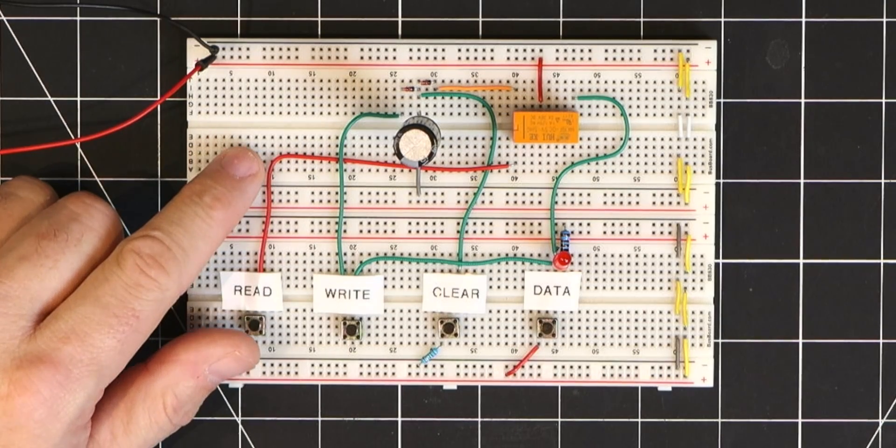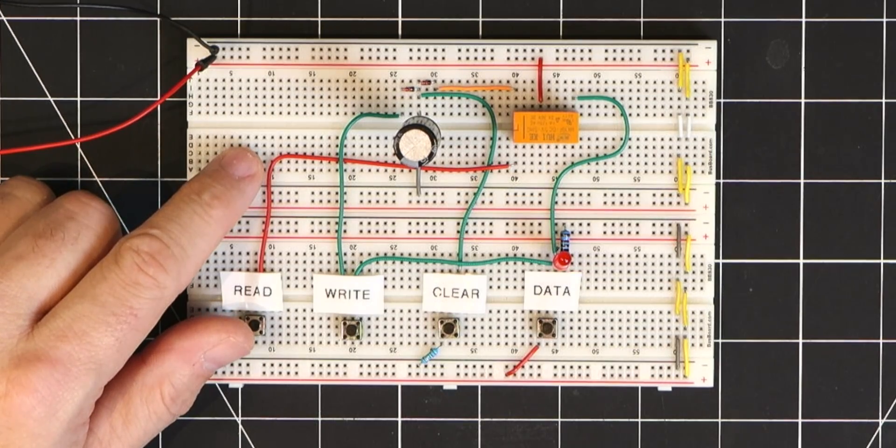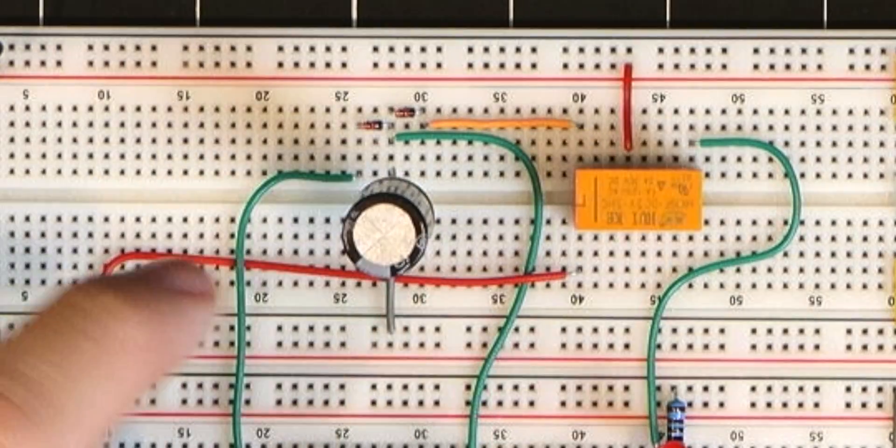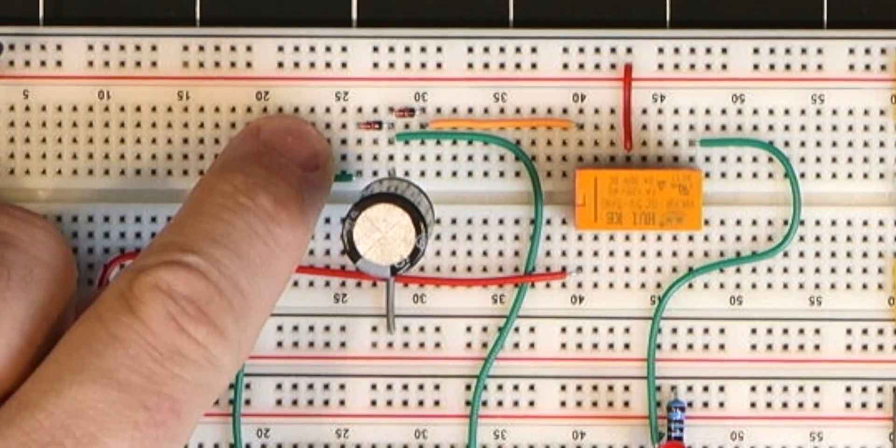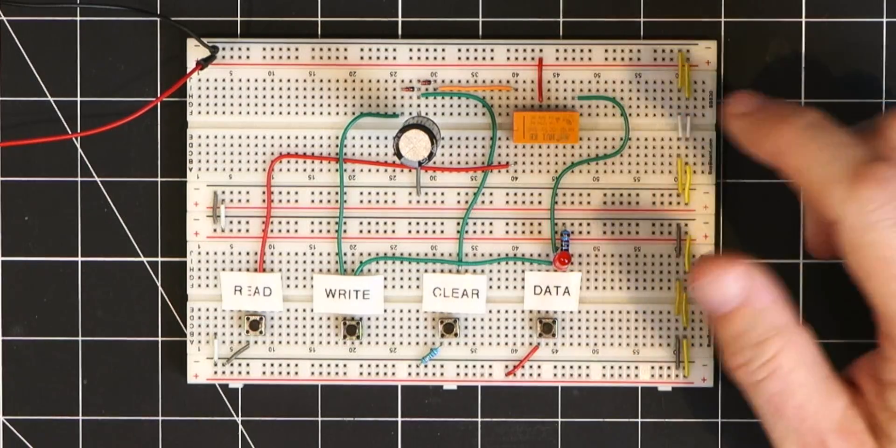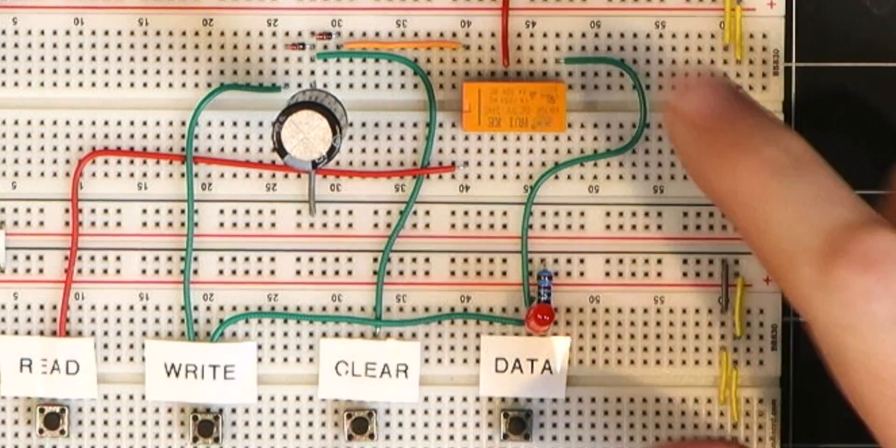I've created this simple one bit capacitor memory to demonstrate this concept. On the top board we have our storage capacitor which is the star of this show, and on the top of that we have our two diodes that control the flow of current to and from this capacitor. To the right we have a relay that simply gates a read operation output to the data bus.